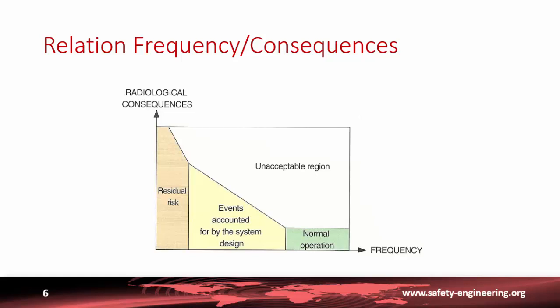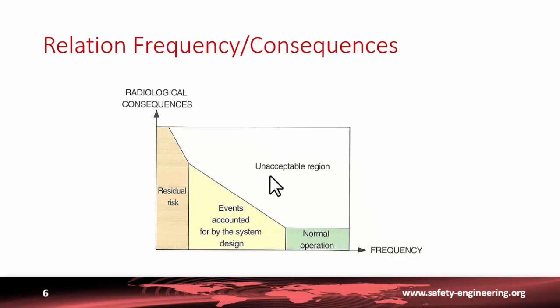An important design rule links the frequency of the accident or transient with the consequences: the higher the potential consequences, the lower the frequency should be. We can distinguish several regions. In normal operation, consequences should be very limited if not nil. At the other end of the spectrum, accidents with potentially high consequences should have a very low frequency — less than one in a million years. Between them, events are classified according to their frequency and consequence and should remain in the acceptable domain.